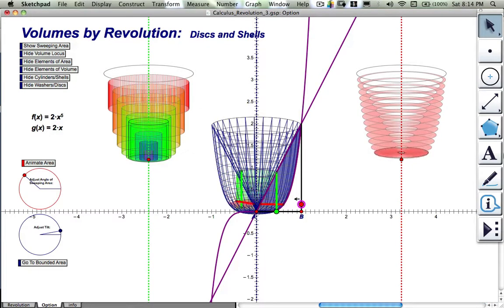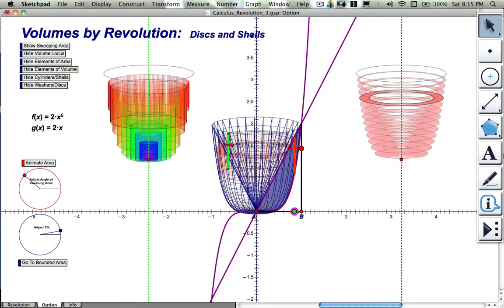So each y value has a horizontal segment, and it spins around and makes a washer. Each x value has a vertical segment, it spins around parallel to its axis, and it defines a cylindrical shell.